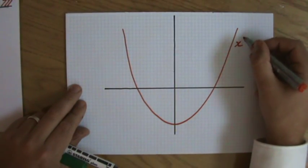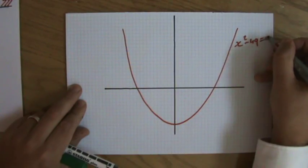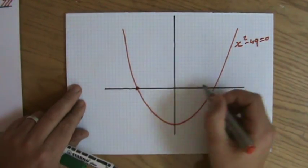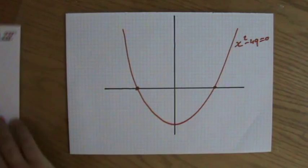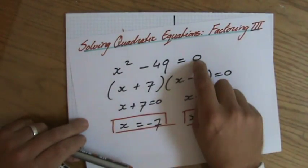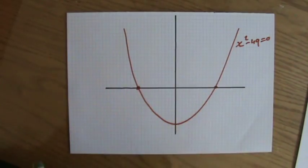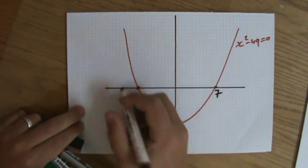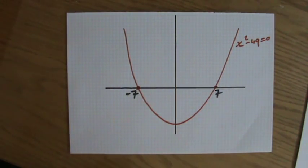x squared minus 49 equals 0. And what is this point and what is that point? Well, those are the points where my y is 0. So this is going to be 7, and that's going to be -7.